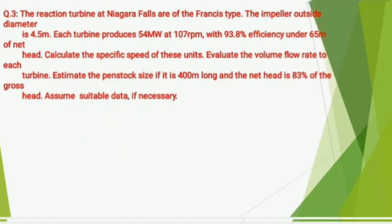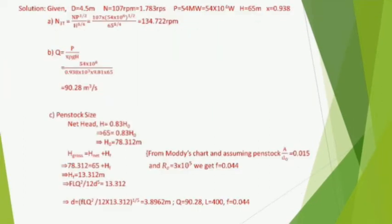Question Number Three: The reaction turbines at Niagara Falls are of the Francis type. The impeller outside diameter is 4.5 meter. Each turbine produces 54 megawatt at 107 rpm with 93.8 percent efficiency under 65 meter of net head. Calculate: (a) specific speed, (b) volume flow rate to the turbine, and (c) penstock size, given it is 400 meter long and net head is 83 percent of gross head.